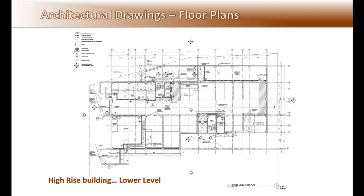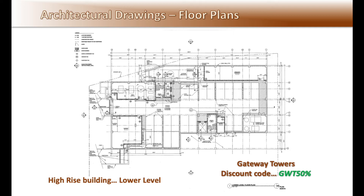The next few plans are from a high-rise building called Gateway Towers, showing each floor of the building starting at the lowest underground garage level named lower level. The plans are not in the book. If you want a set to review, go to my website and order them for a discounted price of $10. Use discount code capital GWT 50 percent. My website is www.printreading.us.